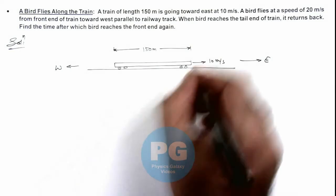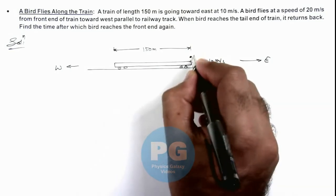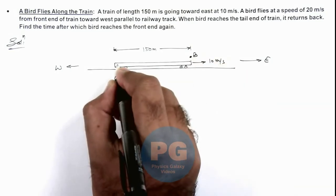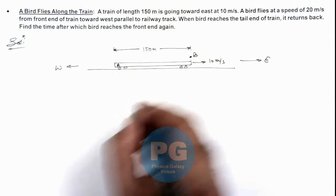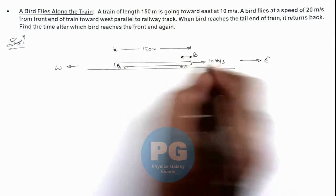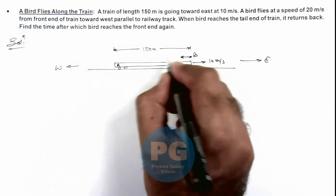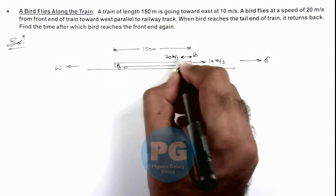Here, there is a bird B, and we name this train as T. The bird is flying in the opposite direction at a speed of 20 meters per second toward west.